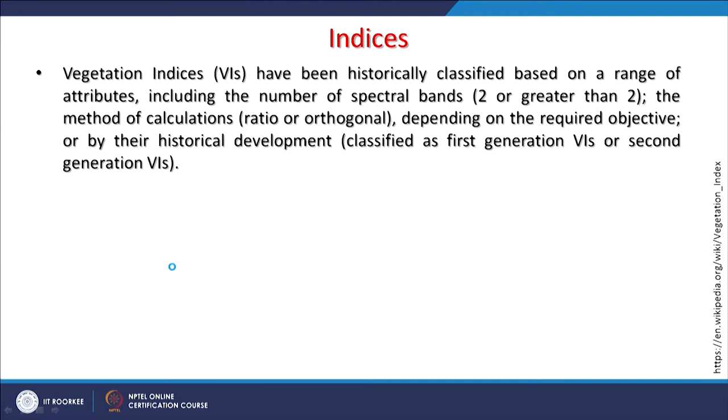What we are doing through these indices is the measurement of vegetation attributes, including leaf area index (LAI), percent green cover, chlorophyll content, green biomass, and absorbed photosynthetically active radiation (APAR). Many such products are being generated. The fundamental remains the same: healthy vegetation has maximum reflection in the infrared channel and that can be exploited.